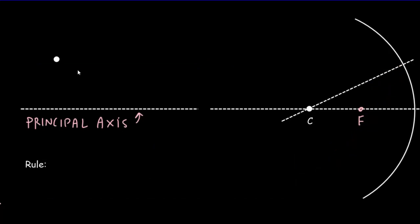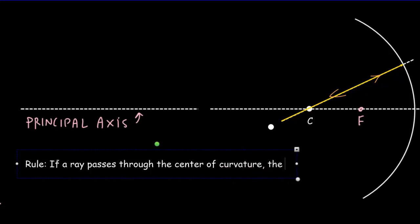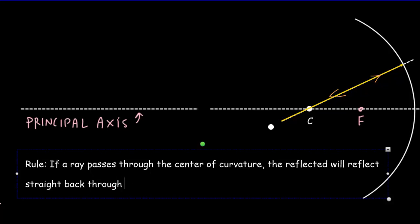We can obtain a third rule: if we imagine a ray passing through the center of curvature, going in that direction, it's going to hit a perpendicular surface and bounce straight back. So our third rule is: if a ray passes through the center of curvature, the reflected ray will reflect straight back through the center of curvature.